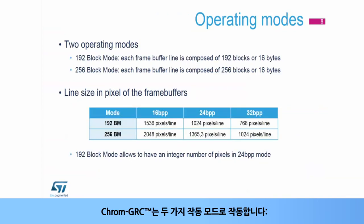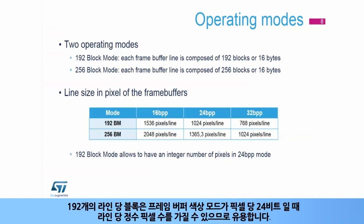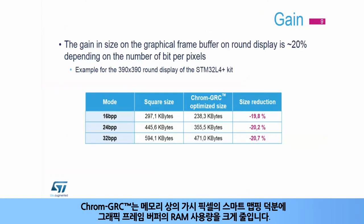The Chrome GRC runs with two operating modes: 192 blocks per line mode or 256 blocks per line mode. The 192 blocks per line mode is useful as we can have an integer number of pixels per line when the frame buffer color mode is in 24 bits per pixel. Thanks to the smart mapping of visible pixels in the memory, the Chrome GRC reduces RAM usage significantly for the graphical frame buffer.